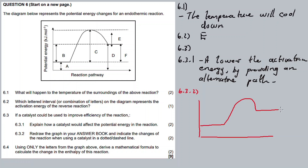By adding a catalyst, it lowers the activation energy by providing an alternative path. This is the new path with the catalyst added. This is the new sketch showing the potential energy and the reaction path with a catalyst.